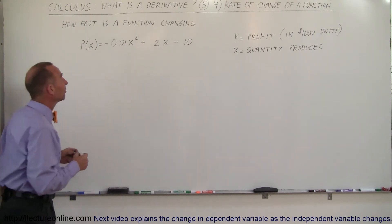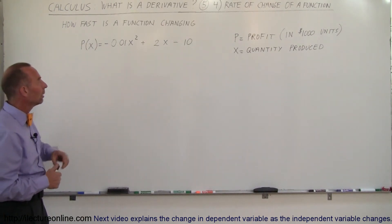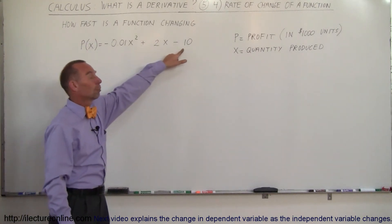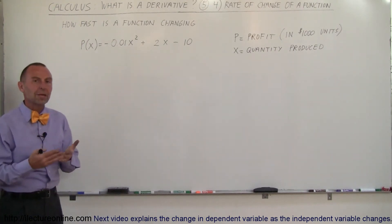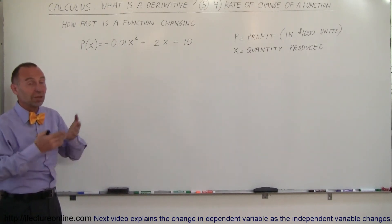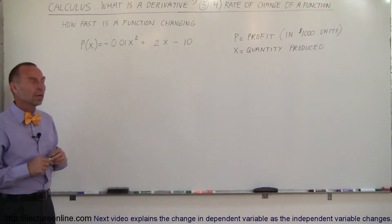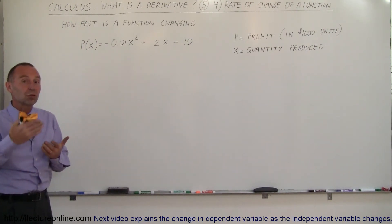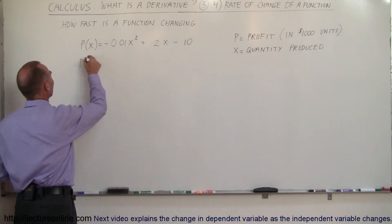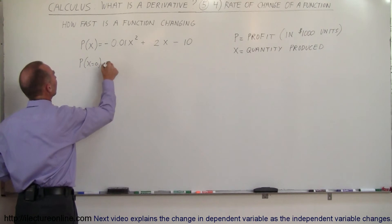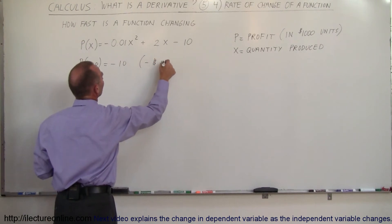For example, let's say you don't produce any units whatsoever. You have an overhead cost of keeping your factory going, so if x = 0, your profit is -10, which means minus ten thousand dollars. Your cost of operating would be ten thousand dollars per day or week, and obviously if you're not producing any units, you're losing a lot of money.